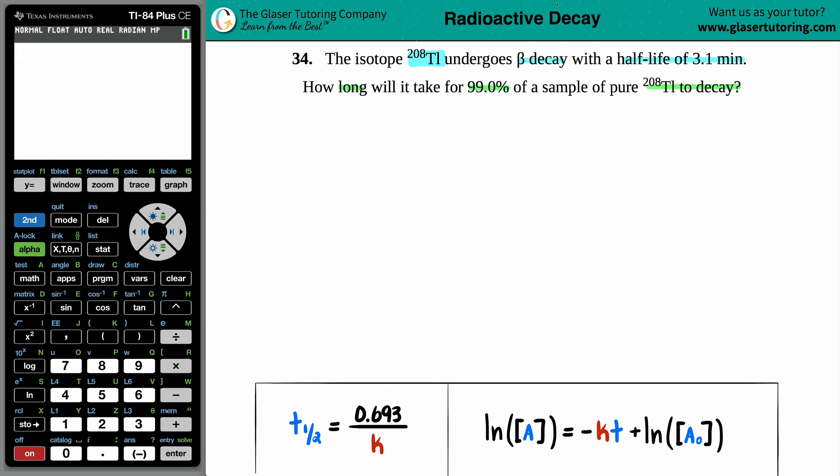Okay, so we're talking about radioactive decay. We have a radioactive isotope, we have thallium, and it undergoes beta decay, so that tells us we're dealing with radioactive material.